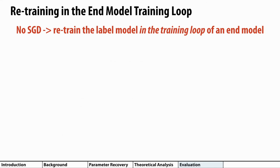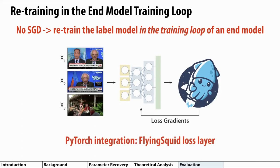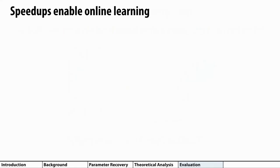Since we can train the label model in fractions of a second, we can retrain it within the training loop of an end model. We've released a PyTorch integration that does this exactly, a loss layer like batch norm that runs FlyingSquid in the training loop. This means that you can easily incorporate it into your standard training loop.